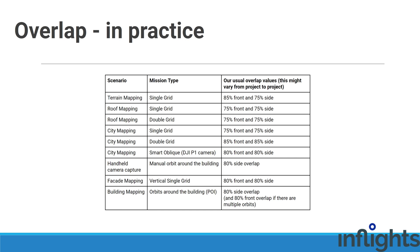Those values may change from project to project, but this should give you some idea of what your overlap values should look like. Please note that for some projects there is some margin included in the overlap setting. For example, when we do terrain mapping, we need the trees reconstructed. This is why there is a bit higher front overlap value.